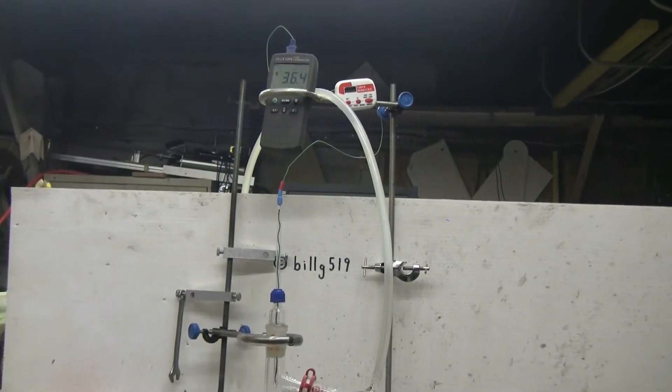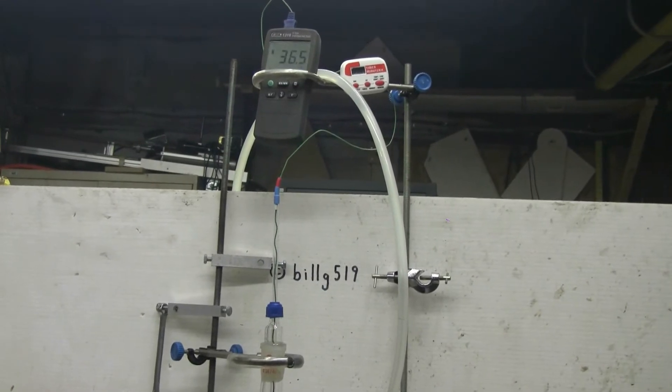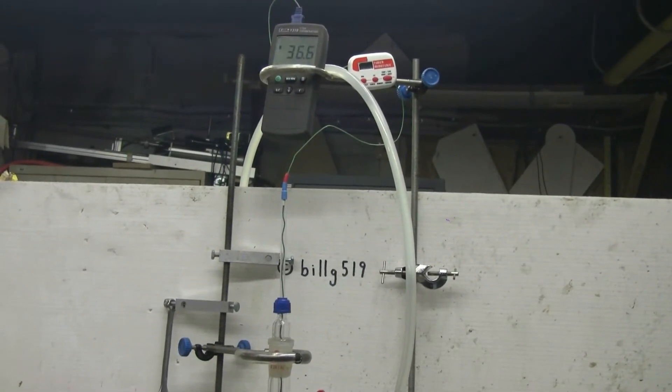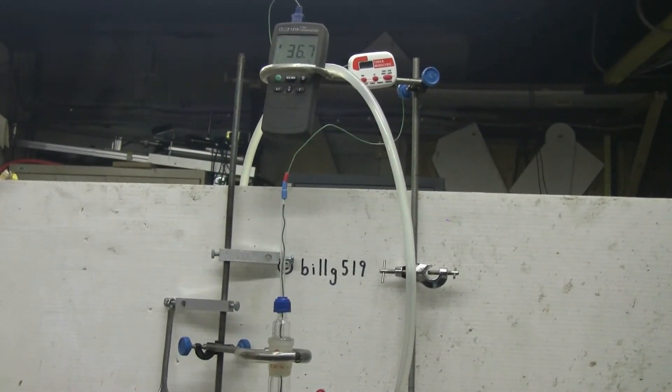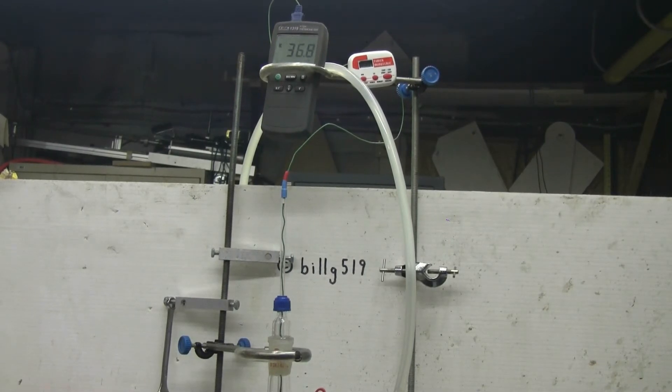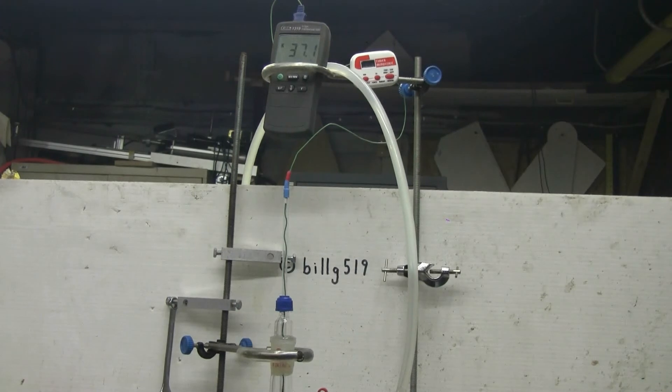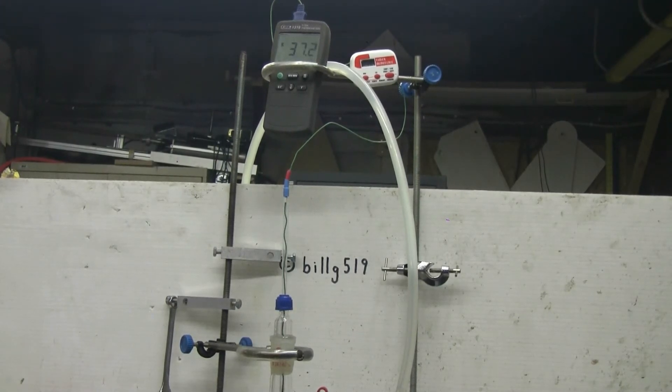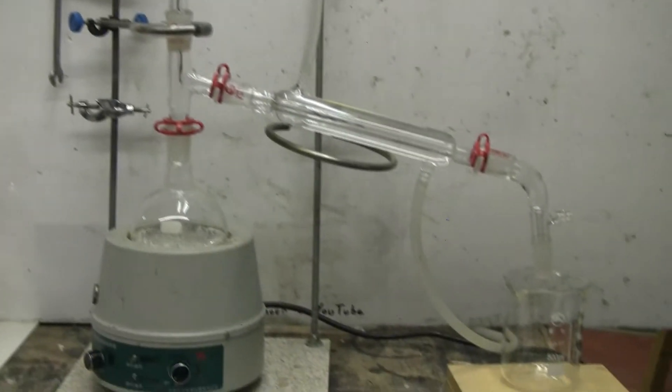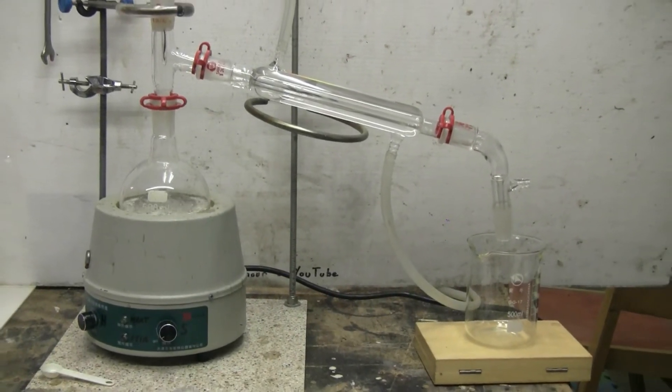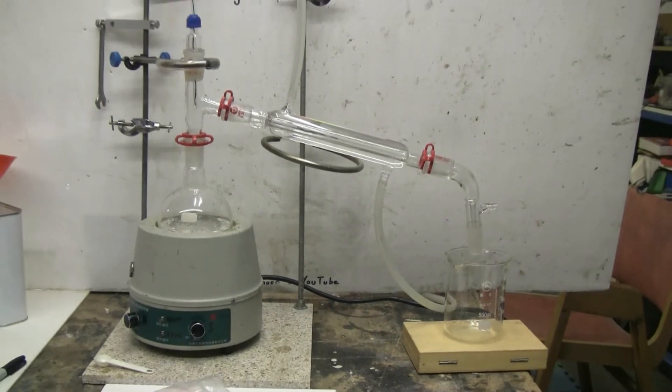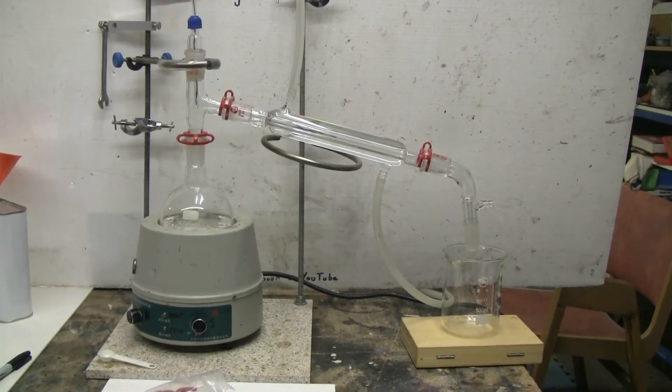Temperature can be seen to be building up to the 39.6 Celsius area, so product should start to distill over shortly. I've got 36.9, 37, 37.1, so something should begin to distill over into my 500 milliliter collection beaker soon.